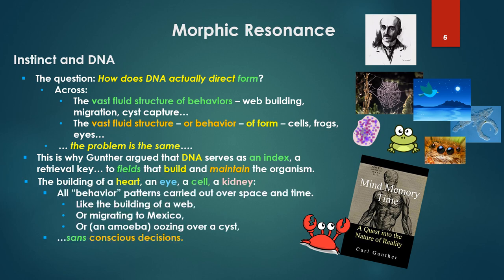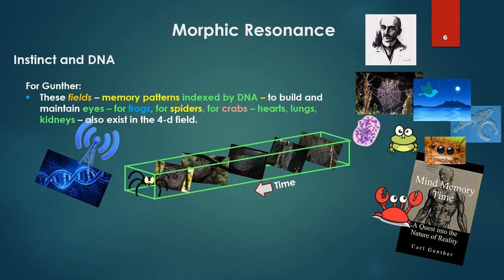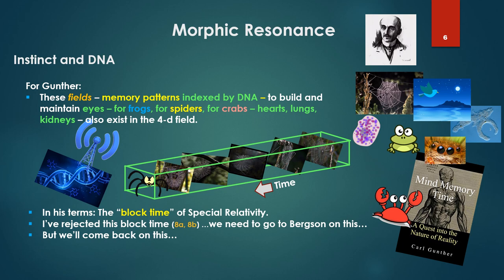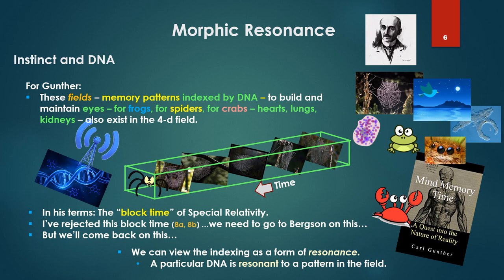The building of a heart, an eye, a cell, a kidney — all are behavior patterns carried out over space and time, like the building of a web, or migrating to Mexico, or an amoeba oozing over a cyst, without conscious decisions. For Gunther, these fields — memory patterns indexed by DNA to build and maintain eyes for frogs, spiders, crabs, or hearts, lungs, kidneys — also exist in the 4D field. He saw this as the block time of relativity. I've rejected this notion of block time; we need to go to Bergson on this. We can view this indexing as a form of resonance. A particular DNA is resonant to a pattern in the field. This is where Sheldrake comes in.